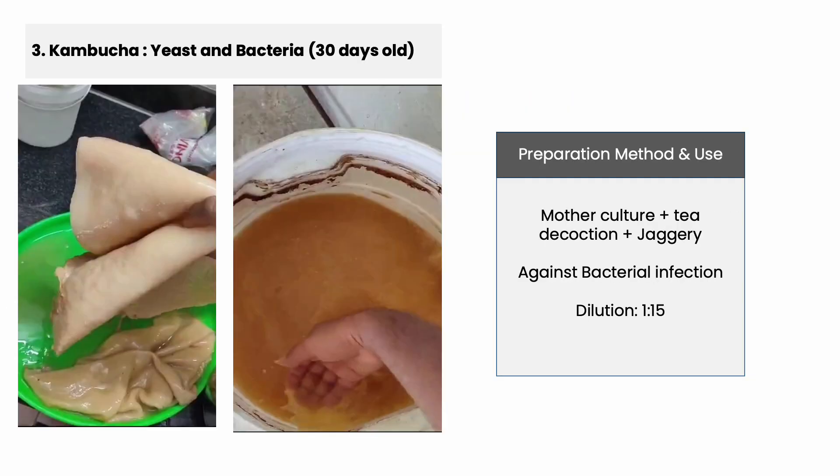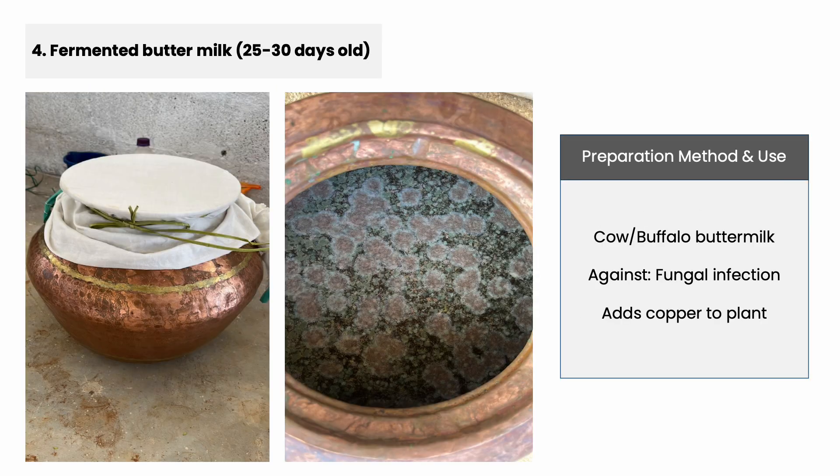The next product is kombucha — it is an association of yeast and bacteria, and this is a very age-old technique. We take the mother culture, then decoction and jaggery, and ferment again for 30 to 35 days. This is excellent for treating bacterial infections in crops.